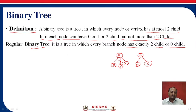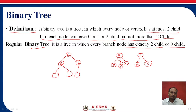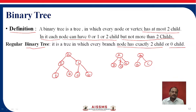Let's see how the structure will be. We will construct one tree with nodes A, B, C, D, E, F, and G. This is called a regular binary tree.